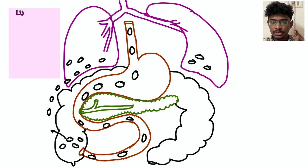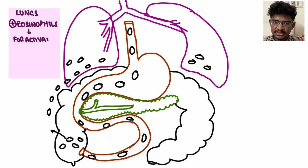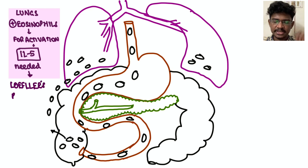So what happens in ascariasis? The eggs which are ingested by the child reaches the terminal intestine, large intestine, cecum. From there they pierce and they go through the lymphatics, they reach the lungs. And there they activate the lymph eosinophils because they are mediators in parasitic infections. So for eosinophil activation, interleukin-5 is needed.